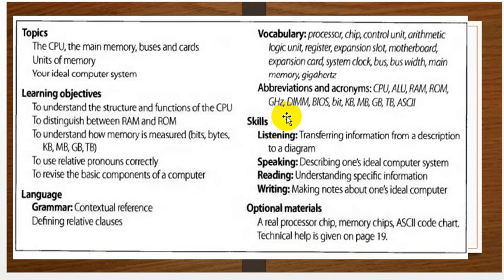Skills. Listening: transferring information from the description to a diagram. In the speaking section, we should describe one's ideal computer system — we have to have the ability to describe one's ideal computer system. And in the reading section, we have understanding specific information.